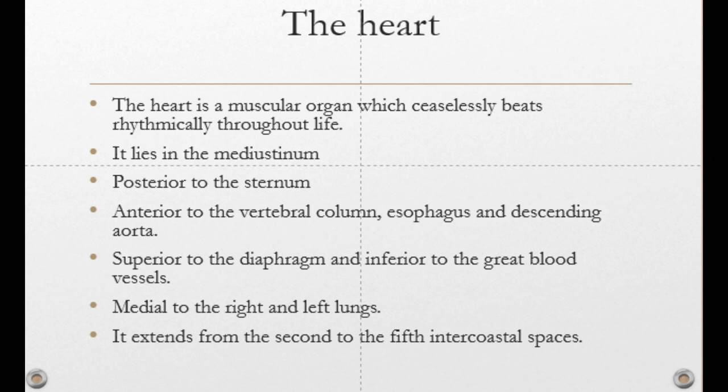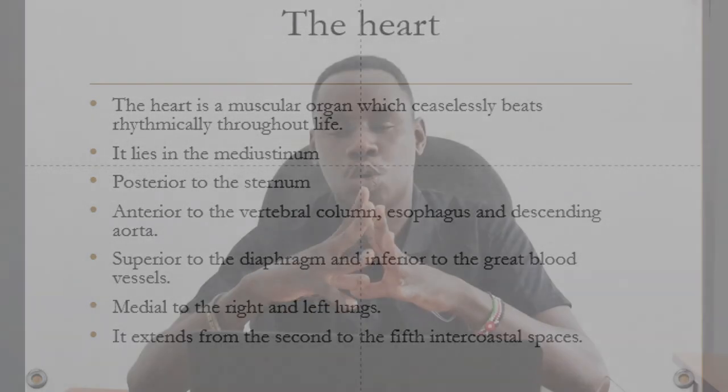The heart is surrounded by other organs. Inferior to the heart, or below the heart, we have the diaphragm. Superior to the heart, or above the heart, we have the major blood vessels. Anterior to the heart, or in front of the heart, we have the sternum. And posterior to the heart, or behind the heart, lies the esophagus, the descending aorta, and the vertebral column.